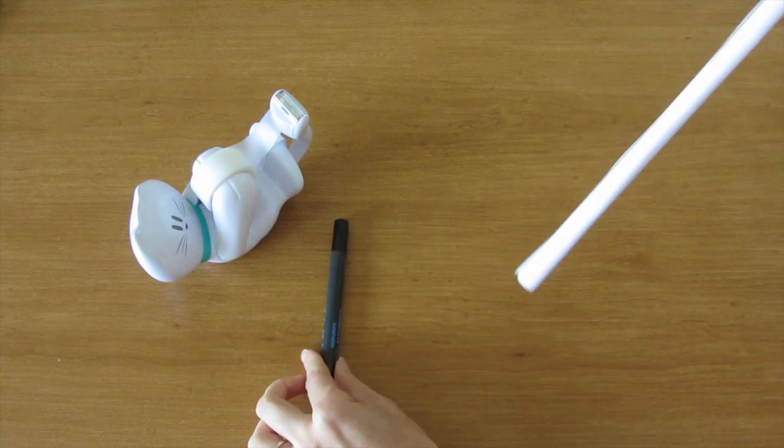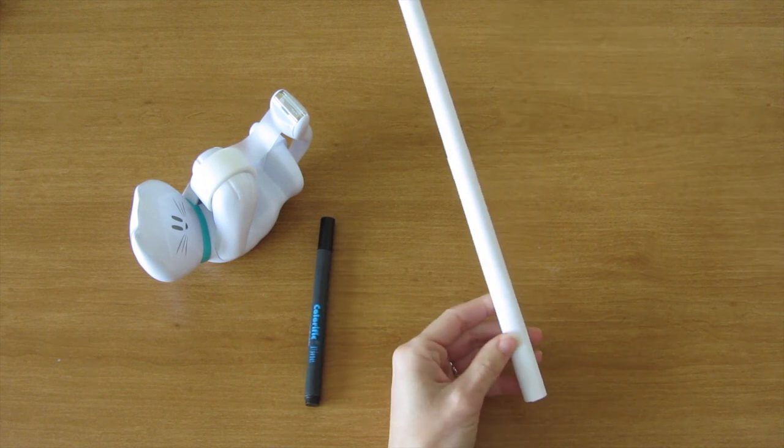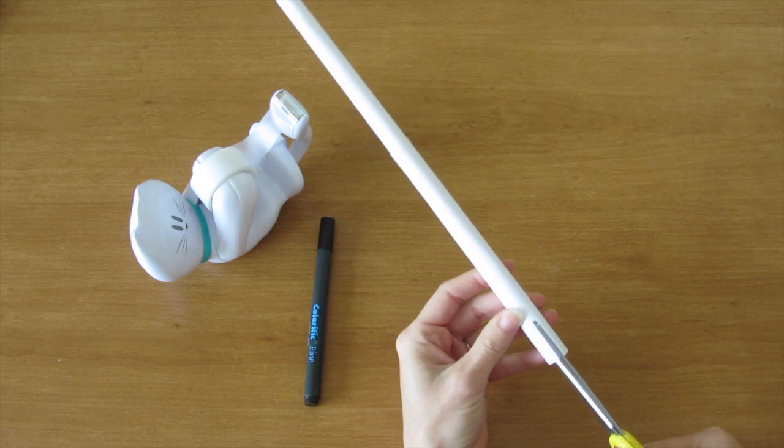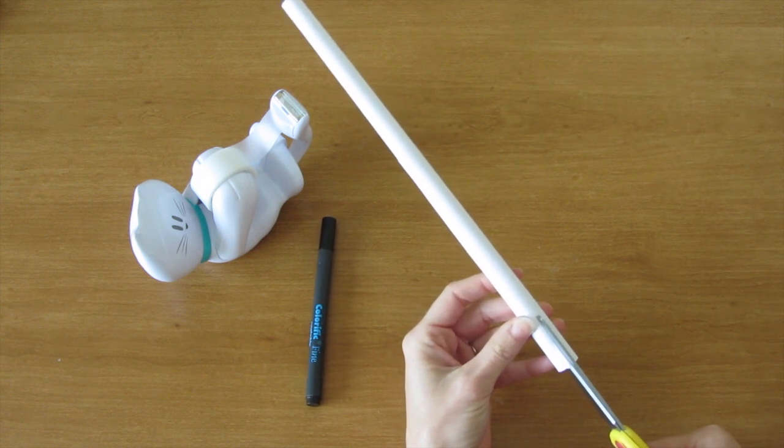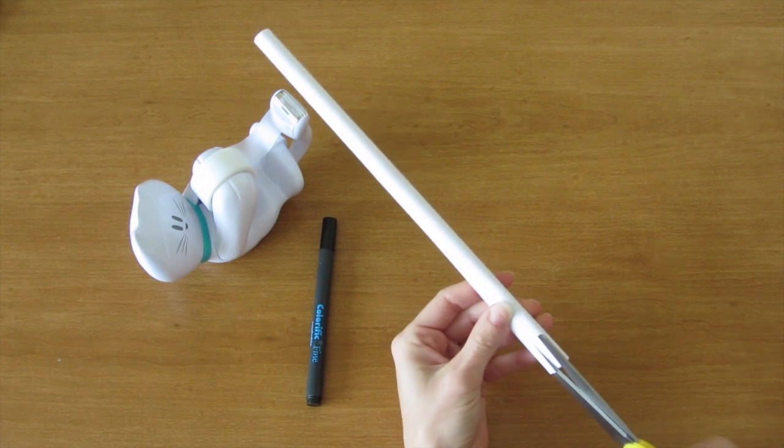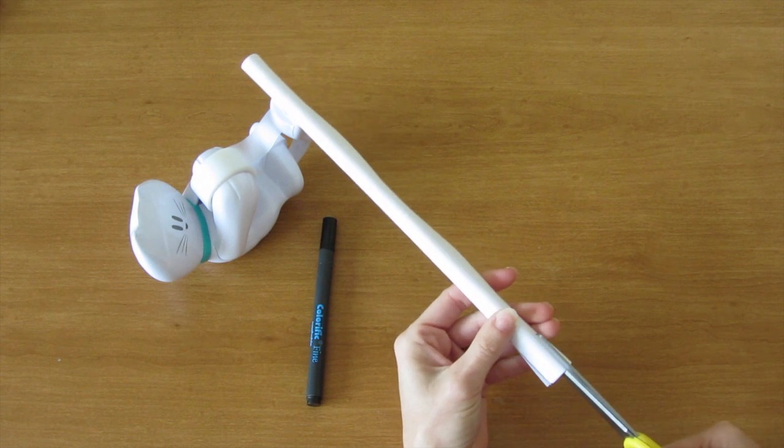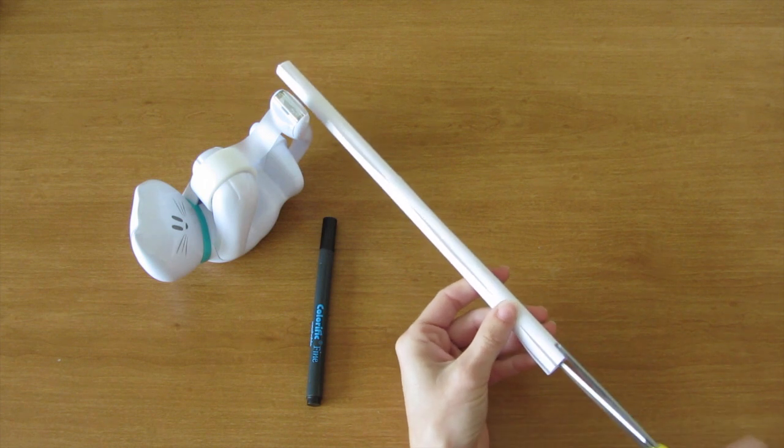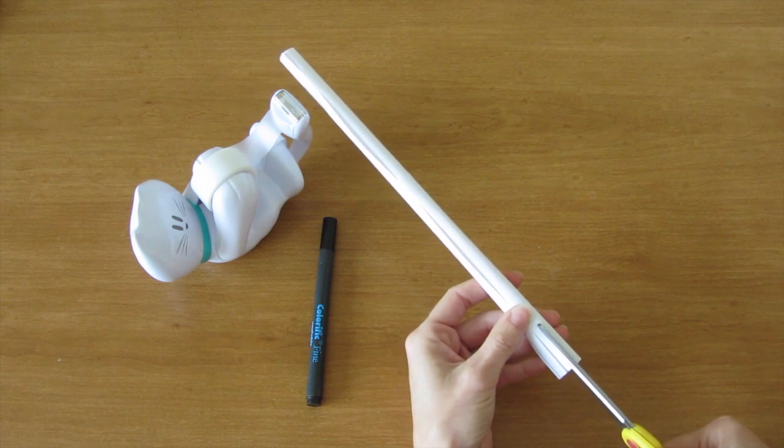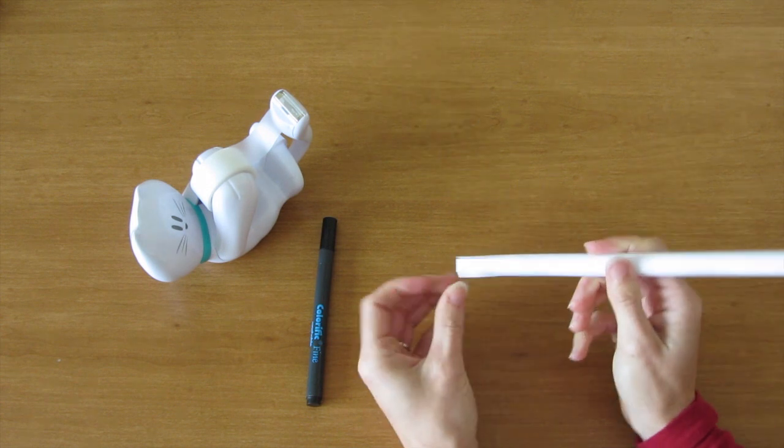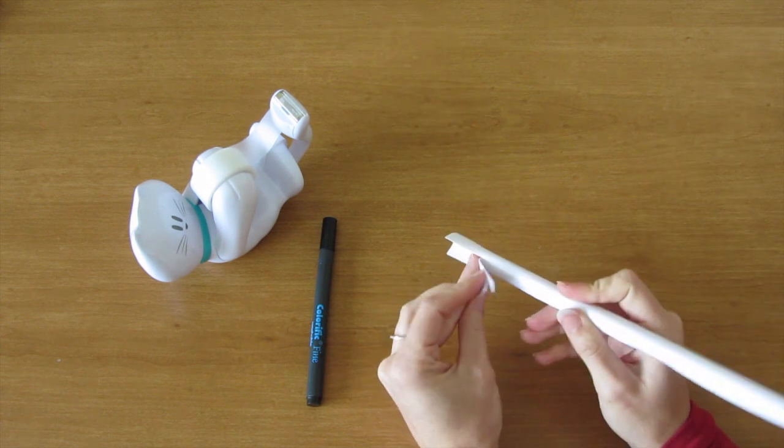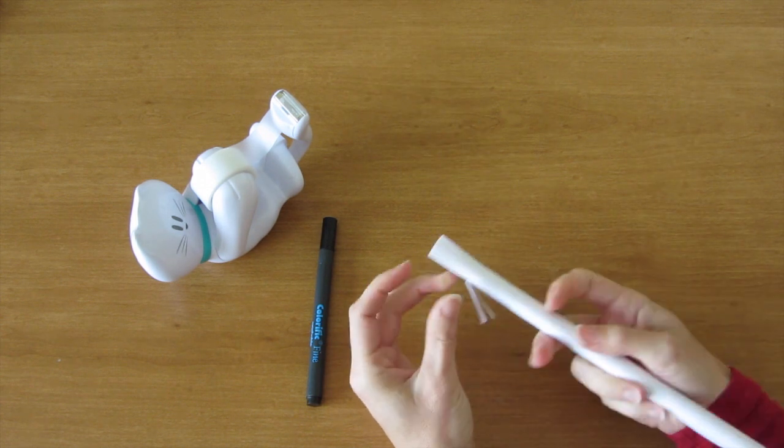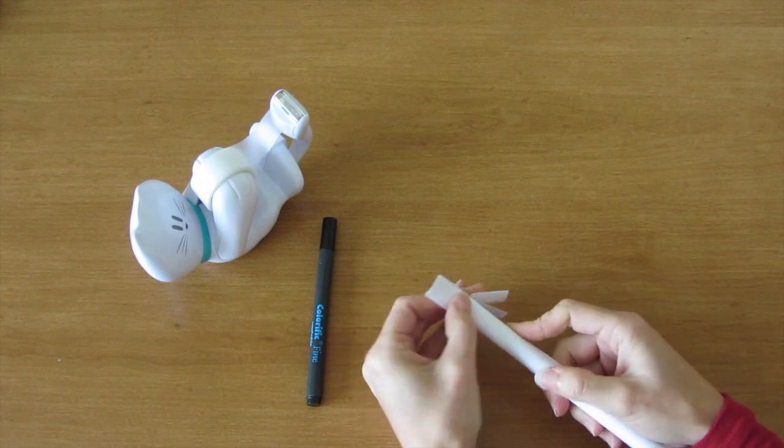Shake that marker out. Then take your scissors and make three slits about an inch long on the bottom. Try to make them a similar size. Then you're going to fold those slits out just like this.